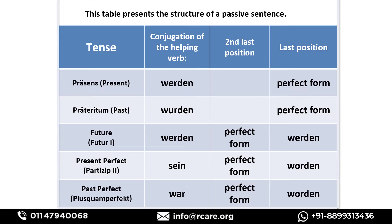Here we have a table representing the structure of passive sentences in different tenses. In present tense, we conjugate the helping verb 'werden' at the second position, and the regular verb is converted into its perfect participle form and placed at the last position. So: 'werden' at second position, perfect participle at last position. Similarly in past tense, 'werden' is conjugated and placed at second position, with the perfect participle at the last position.